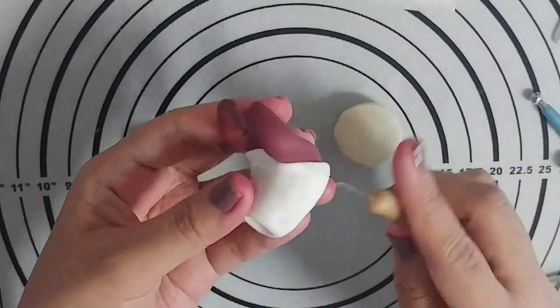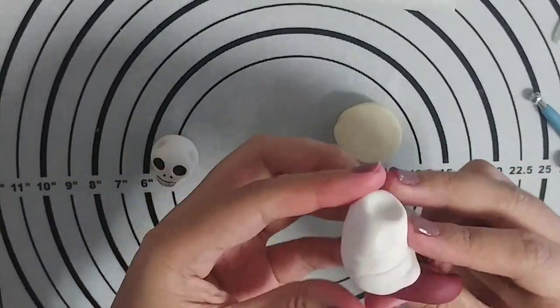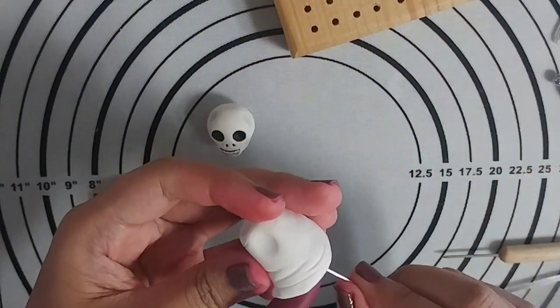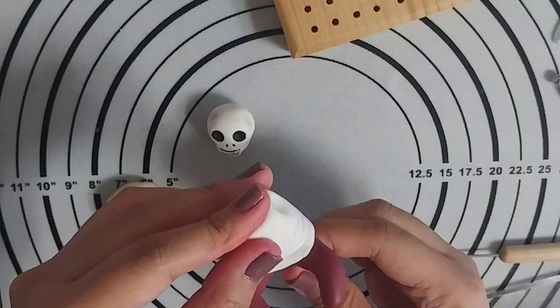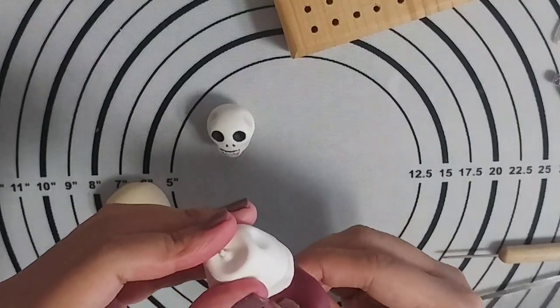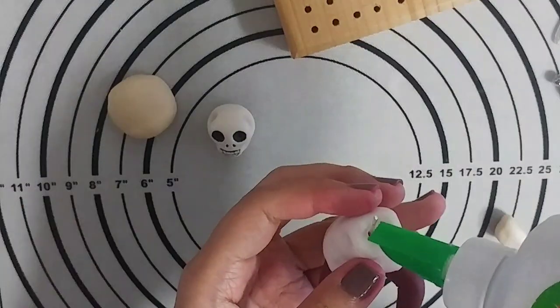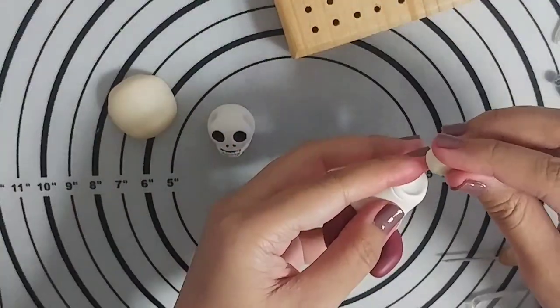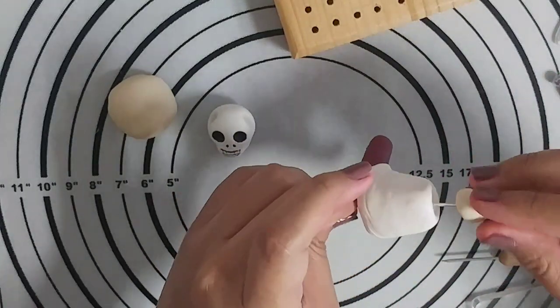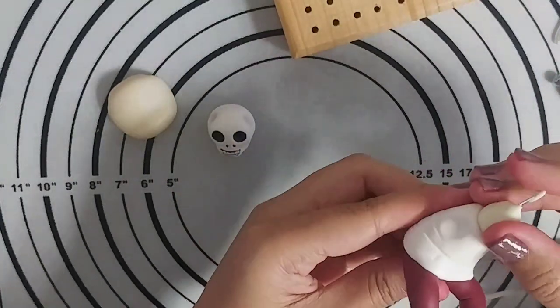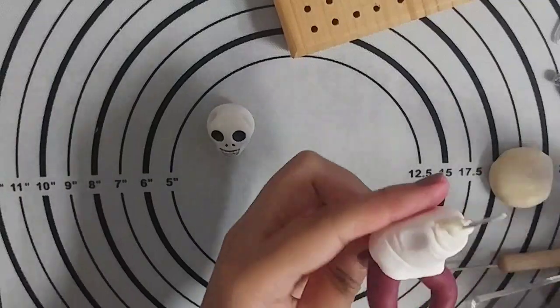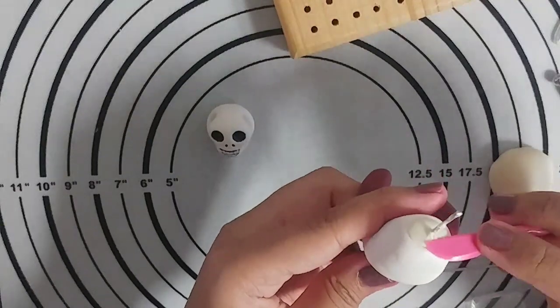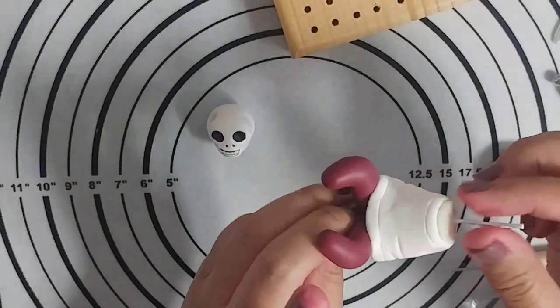Just use a needle tool to make her clothes look more realistic. When making figures, don't forget to put an armature wire to support the chibi. Here I used a small piece of skin tone clay for her almost non-existent neck. And I used a pair of scissors to remove the excess. Just use any tool to smooth it out.